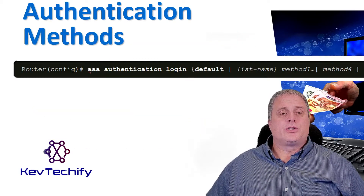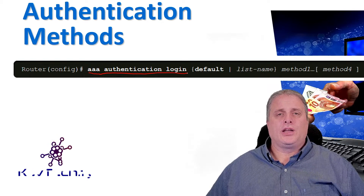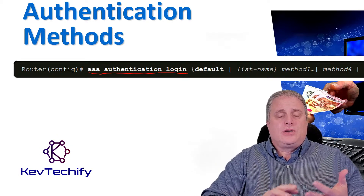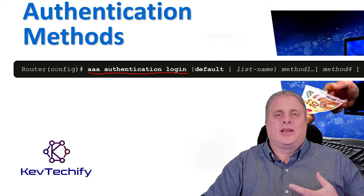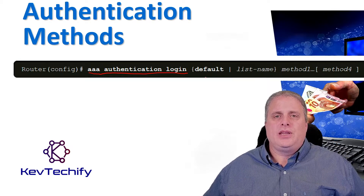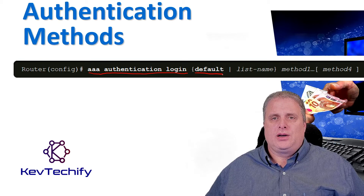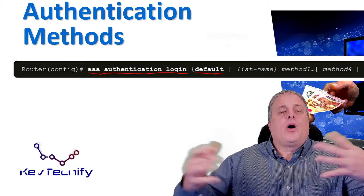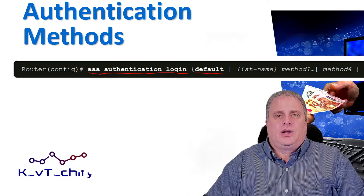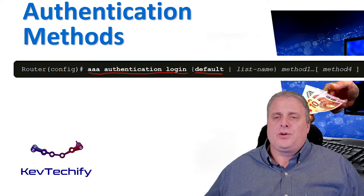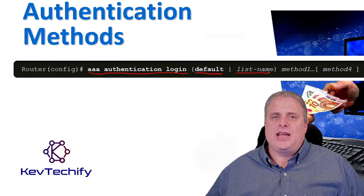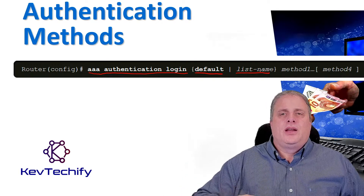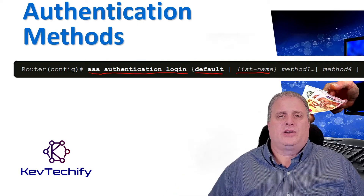Use the AAA authentication login command to enable authentication of the console, auxiliary, and VTY lines. If you put the default keyword in here, it's going to apply authentication to all of those lines. Alternatively, if you create a list and put that list name in here, you can have a custom authentication method to authenticate your servers.